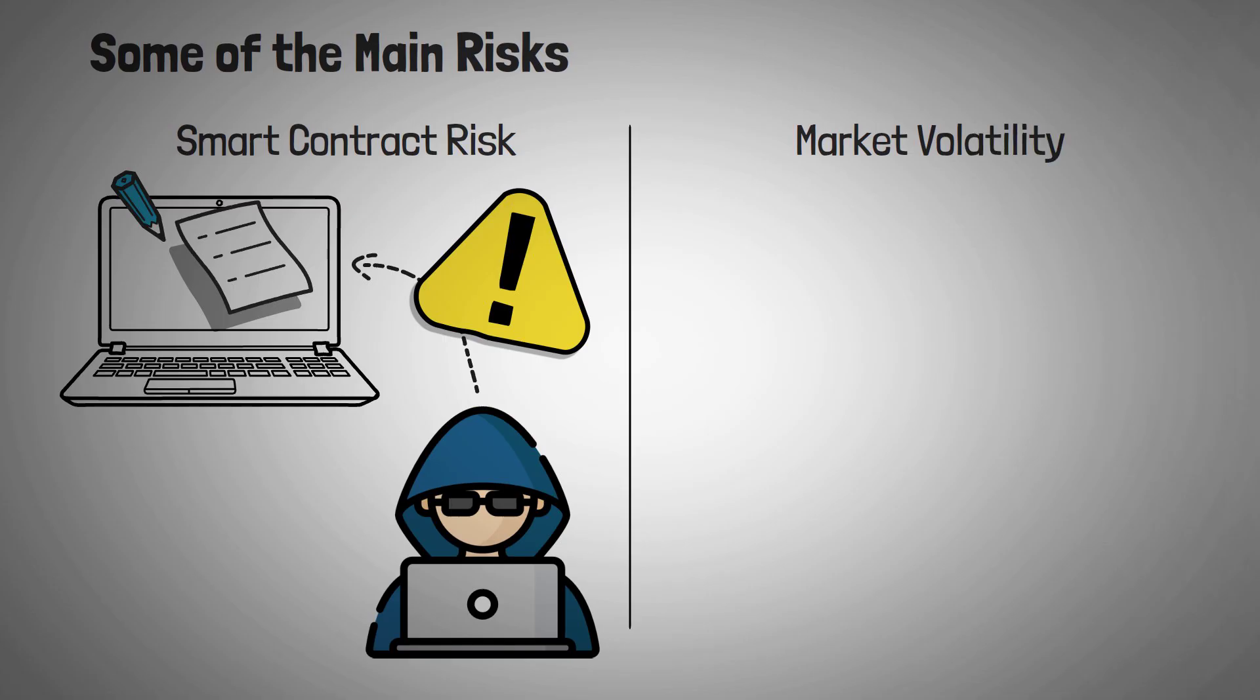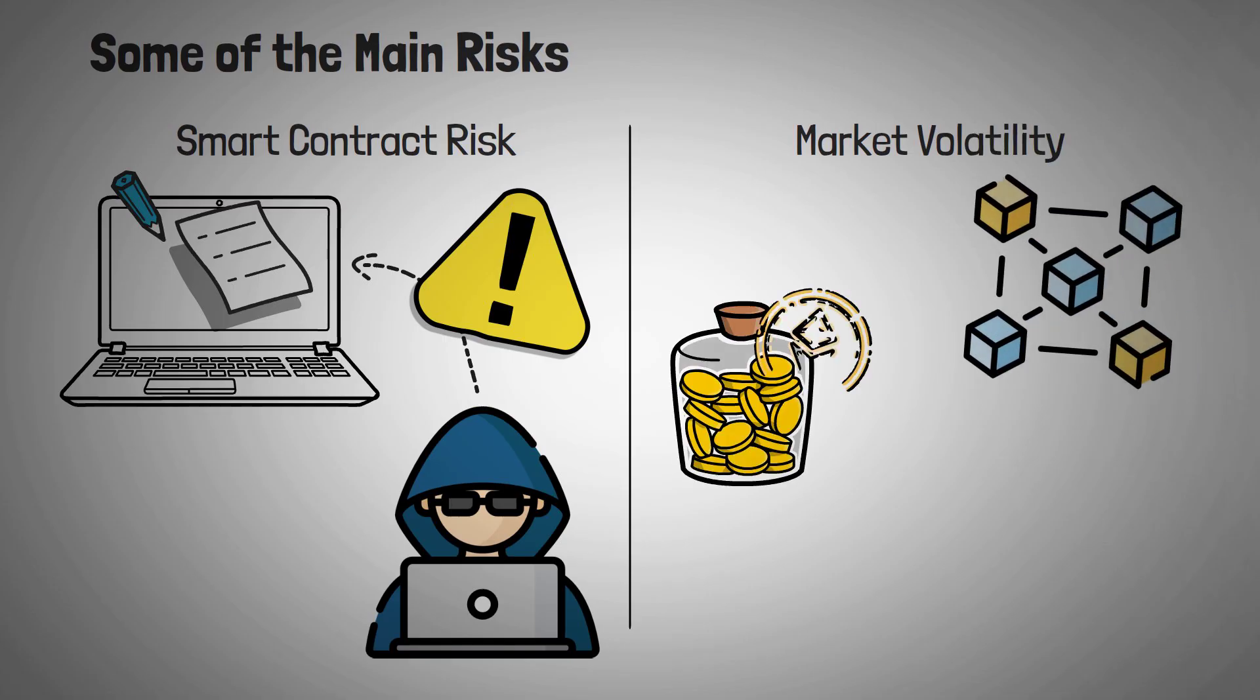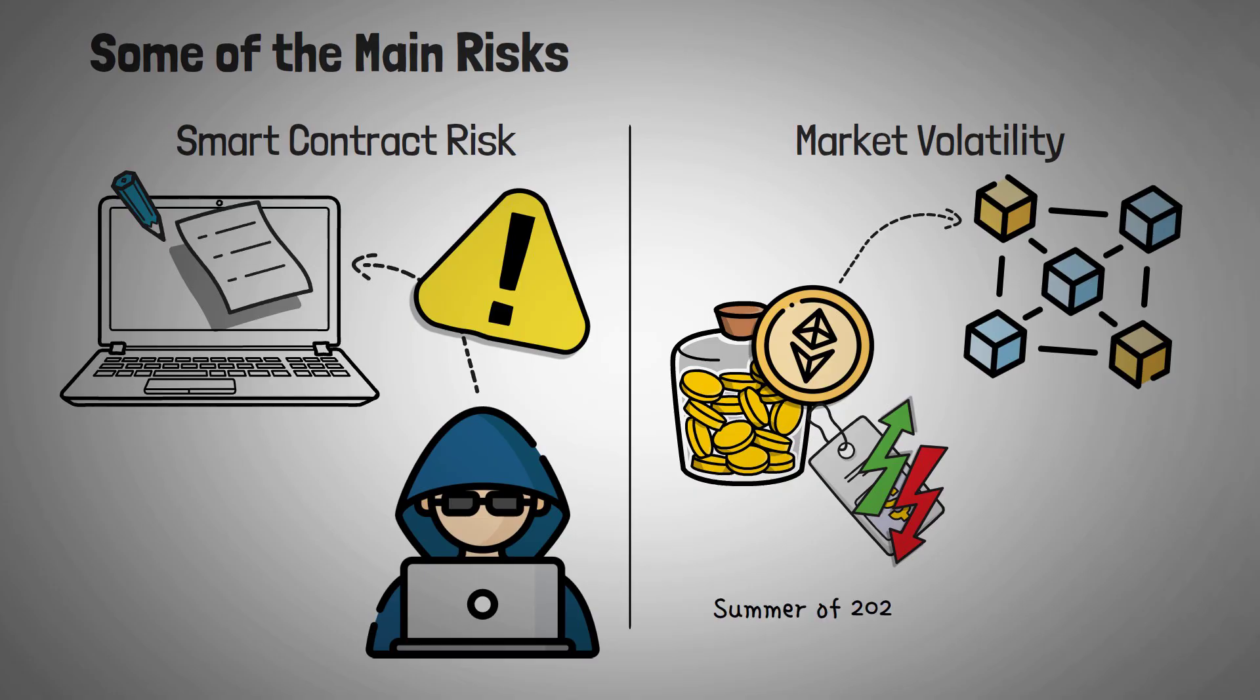Number two is market volatility. The value of staked assets can change, affecting both the rewards earned and the overall investment. The value of an LST can also decouple from the value of the underlying asset. For example, in the summer of 2022, the value of Steeth was lower than the value of ETH. For complicated math reasons we won't get into here. Just know it can happen, even though it's unlikely it is a risk.